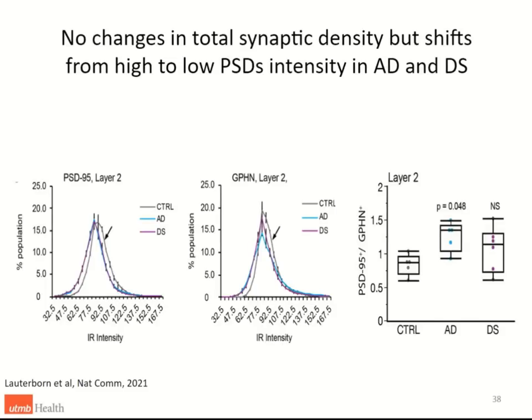Looking at immunofluorescence intensity for PSD-95 and gephyrin in layer two, they follow a normal distribution. In Alzheimer's disease — and we included Down syndrome because it also increases A-beta and risk of Alzheimer's — there is a reduction in PSD-95 layer intensity. For gephyrin, there is also intensity reduction plus a reduction in the peak compared to control. By taking the ratio of PSD-95 over gephyrin, we see an increase in Alzheimer's disease. In Down syndrome the ratio is more variable and not significantly different from control.